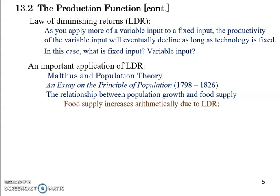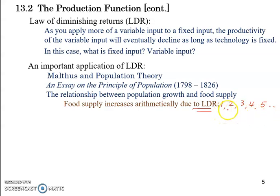To understand this relationship, the first thing we need to understand is that food supply or food production suffers from the Law of Diminishing Returns. In other words, the increase in food output is arithmetic — it will increase from one unit to two to three to four to five. Because of LDR, we would expect this increase to slow down.